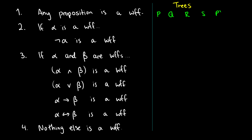If we have some formula alpha that is well-formed, then not-alpha is well-formed. So we can draw this: suppose we have some well-formed formula alpha and a negation, and we can combine those two to give us not-alpha. For example, if we have P or Q and we want to attach a negation to it, we get not-(P or Q) in brackets. That's the only rule we have for unary operators.